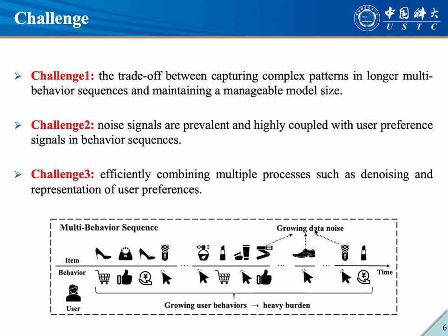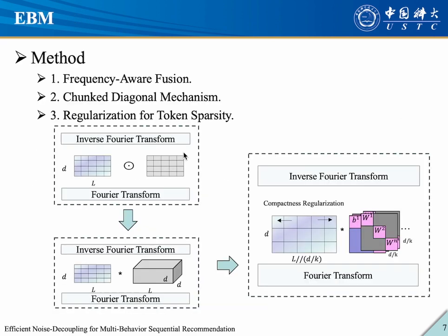Efficient modelling and denoising remain open issues with significant challenges. First, the trade-off between capturing complex patterns in longer multi-behaviour sequences and maintaining a manageable model size is a non-trivial problem. Then, noise signals are prevalent and highly coupled with user preference signals in behaviour sequences, bringing great challenges to decoupling user preferences from noise due to their close relations and absence of explicit noise annotations. Last but not least, efficiently combining multiple processes such as denoising and representation of user preferences presents a further challenge.